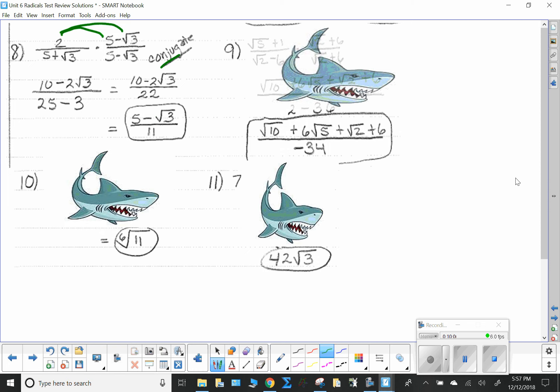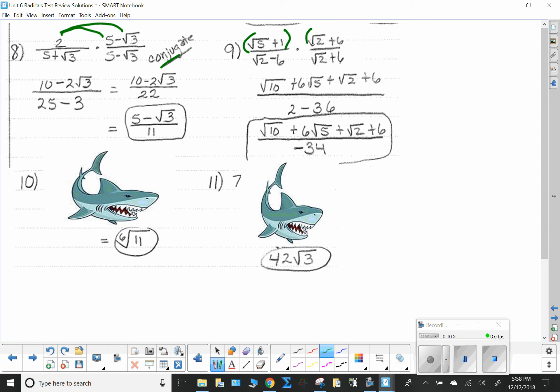Next up is number 9. Obviously, still going to need a conjugate here. We have square root of 2 minus 6. Well, do square root of 2 plus 6. As long as you just make one of them negative, it will work. So, this on the top is going to require you to, for lack of better term, FOIL. So, root 5 times root 2 is root 10. Root 5 times 6 is 6 root 5. 1 times root 2 is root 2. 1 times 6 is 6.